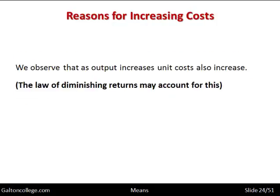We observe that as output increases, unit costs also increase. This may be accounted for by the law of diminishing returns, or it may simply be accounted for by the fact that we're demanding more of a resource and therefore bidding the price up against ourselves — we want more of the resource, we demand more, so the price rises.